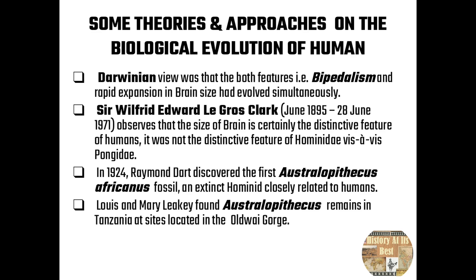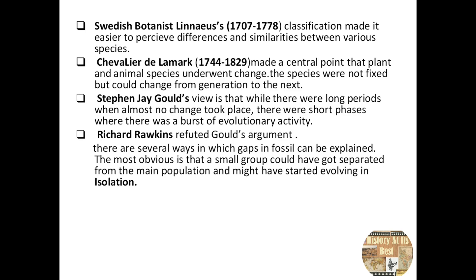The Swedish botanist Linnaeus was very important because his classification made it easier to perceive differences and similarities between various species. The Lamarck theory made a central point that plant and animal species underwent change — species were not fixed but could change from one generation to the next. This was very important in every aspect of evolutionary thought.